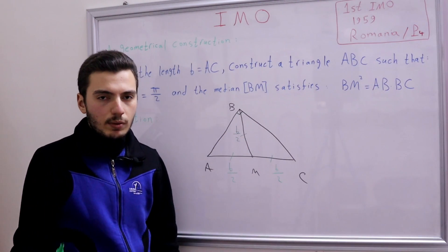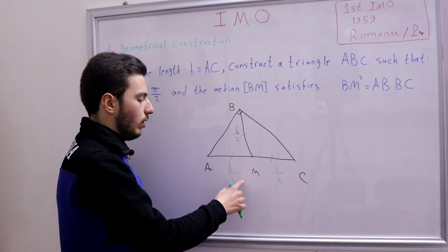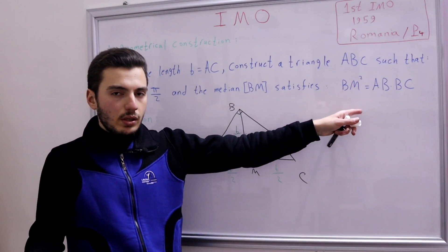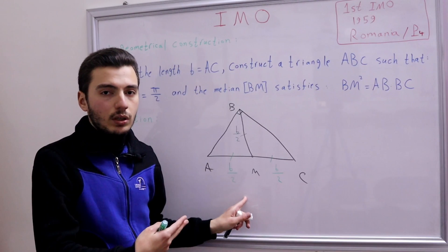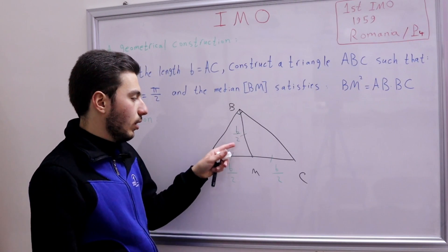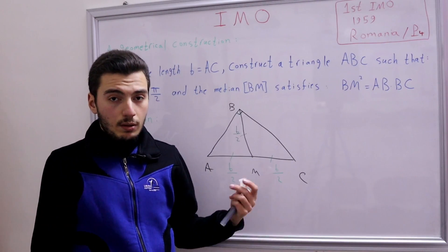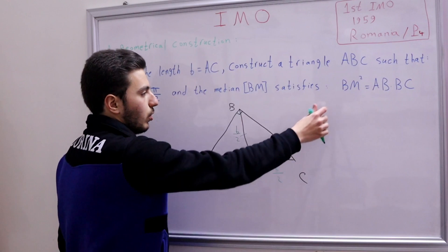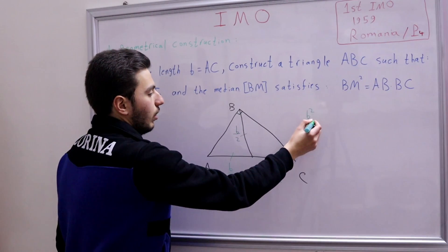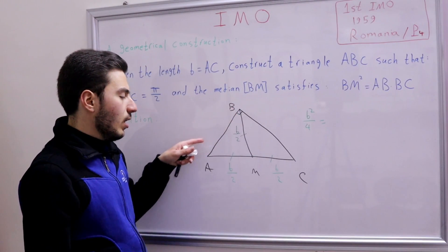This can be proven by simple angle chasing. So BM = b/2, and BM² = (b/2)² = b²/4. Now let's look at the relation BM² = AB · BC. Since BM² = b²/4, we get b²/4 = AB · BC. We've eliminated BM and replaced it with a simpler expression involving b.